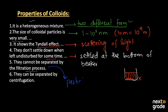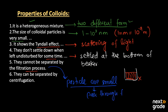The reason they cannot be separated by filtration is that the particles are too small in size. They pass through the filter paper, so they cannot be separated by the use of filter paper. They can only be separated by centrifugation.